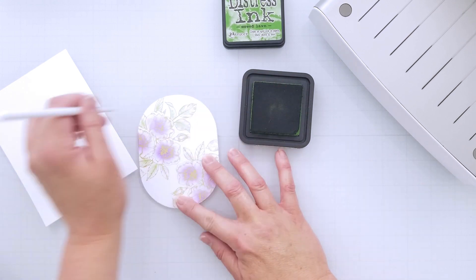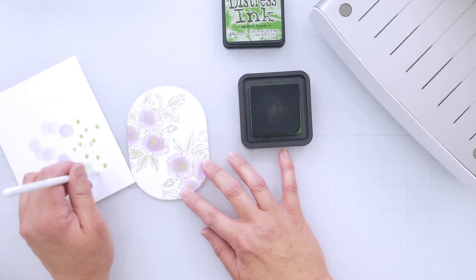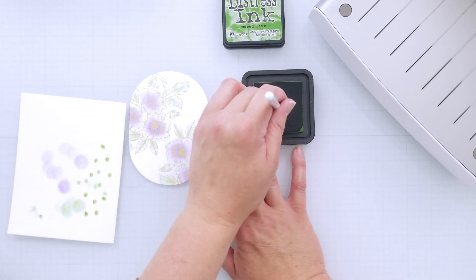For the leaves, I'm going to take Mowed Lawn Distress Ink and take one of the Mini Ink Blending Brushes from Spellbinders, and that gets in all the tiny little nooks and crannies of these leaves, and just add kind of a hint of green. I don't want to really overdo it with this image. There's kind of a lot going on. There's a lot of foiling, a lot of texture. We're just going to add a tiny bit of color, and it just goes on really fast. And we're done. Almost. There we go.